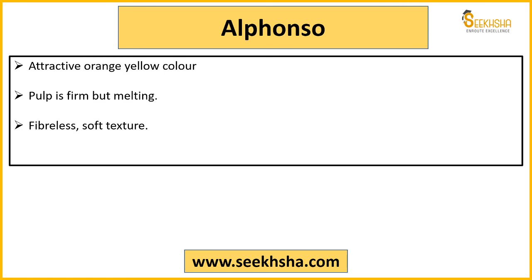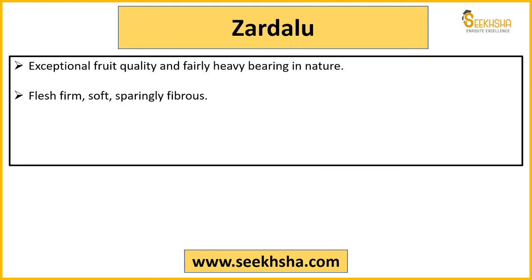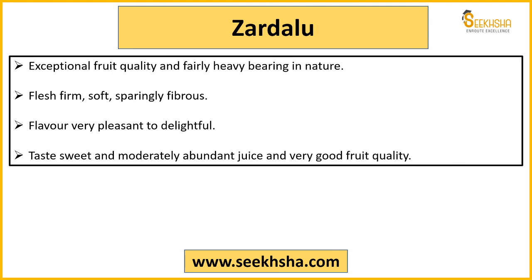Alphonso's pulp is firm but melting, soft, fiberless, and the texture is quite soft. The blend of acid and sweet is very good, giving a tangy-sweet taste. If you have eaten or ever eat Alphonso mango, it gives a sweet-sour flavor - it is not very sweet; its specialty is that sweet-sour balance. Then for Zardalu: fruit quality is good, yield is also good, flesh is firm, soft, and sparingly fibrous with a little fiber. The flavor is good and it is known for its juice quantity.